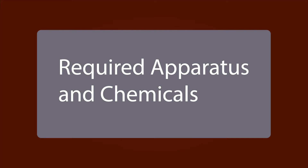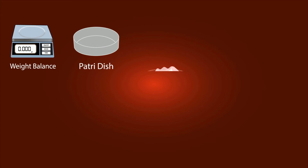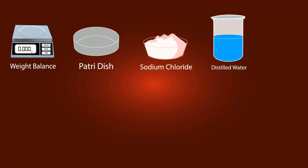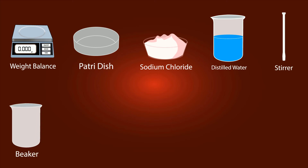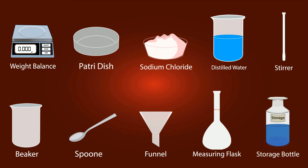The apparatus we will require in this procedure will be: a weighing balance, a petri dish, sodium chloride, distilled water, a stirrer, a beaker, a spoon, a funnel, a measuring flask, and a storage bottle. Now let's start our procedure.